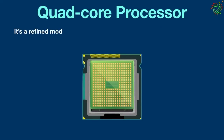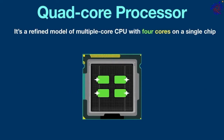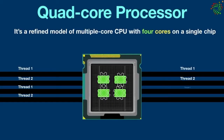Quad core processor — it's a refined model of multi-core CPU with four cores on a single chip. Like a dual core processor which divides the workload between cores, a quad core processor does the same. Each core in a quad core processor can run its own set of instructions at the same time as the other three cores. This way, a quad core processor can support multi-threading, in which multiple threads are executed simultaneously by different cores.